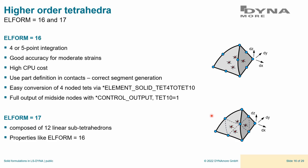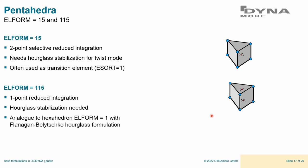The pentahedron elements — which look like a piece of cake — are very useful for connecting hexahedron meshes to tetrahedron meshes. However, they should not be used in a pure pentahedron mesh since performance there is poor. They come with one-point or two-point integration, both of which require hourglass stabilization. They should be used only as transition elements.